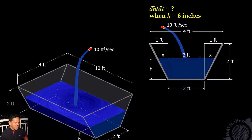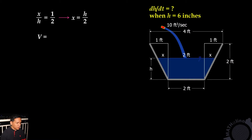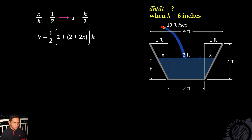By ratio and proportion of this triangle, we have x is to h as 1 is to 2. Therefore, x is equal to h over 2. The volume of the water inside the trough is equal to one half times lower base 2, upper base 2 plus 2x, times h. We actually wrote the area of this trapezoid times the length perpendicular to the drawing. That length is 10 feet.